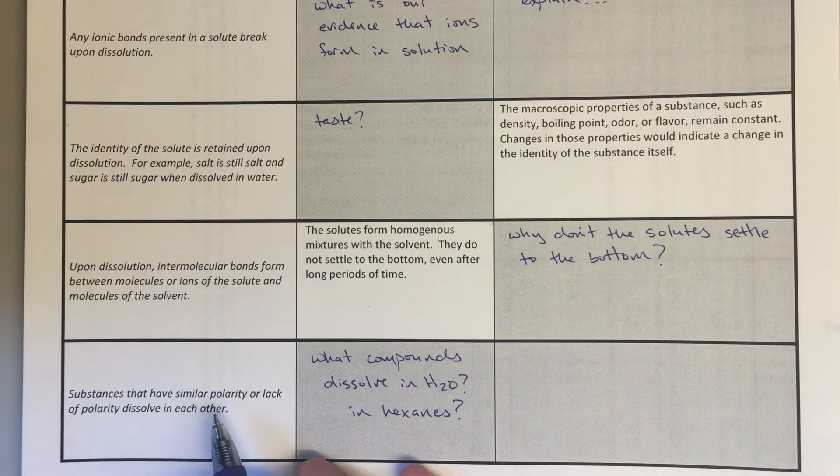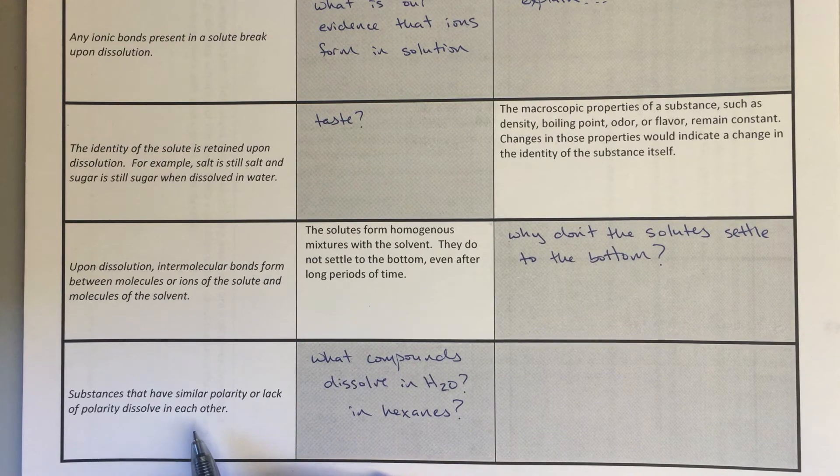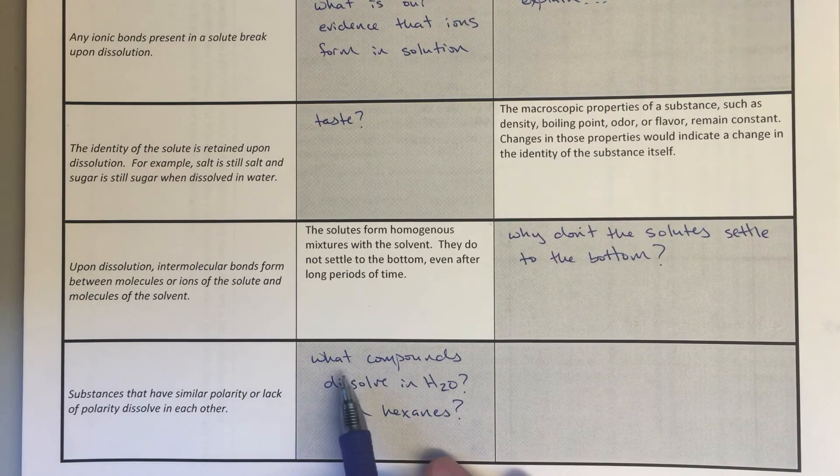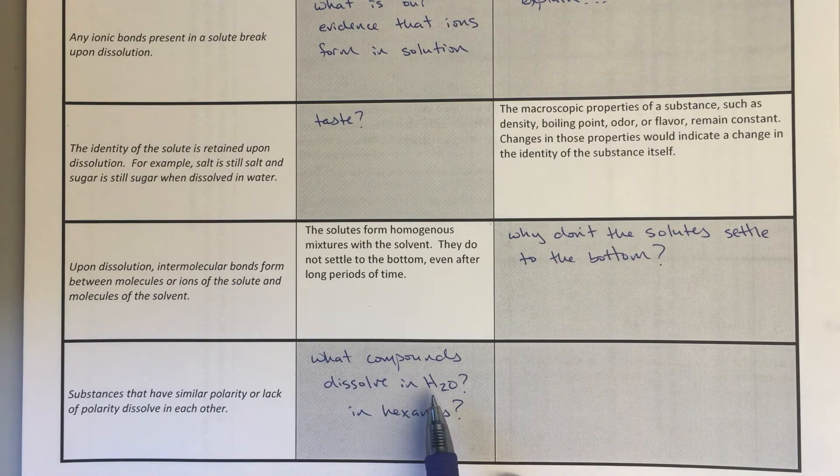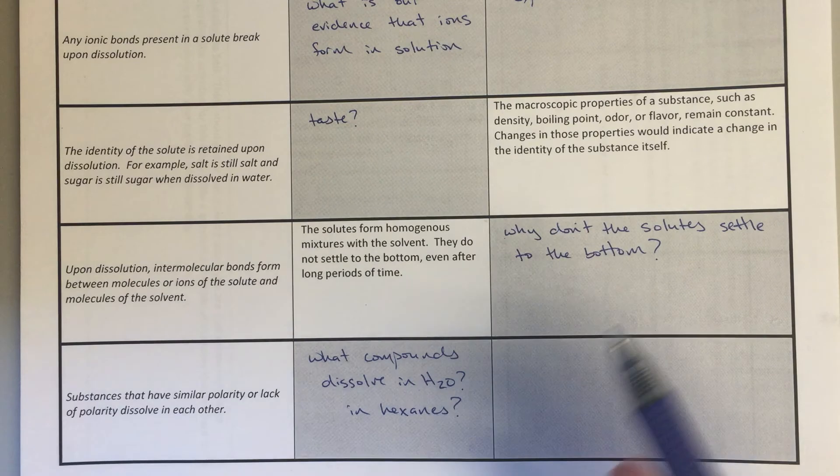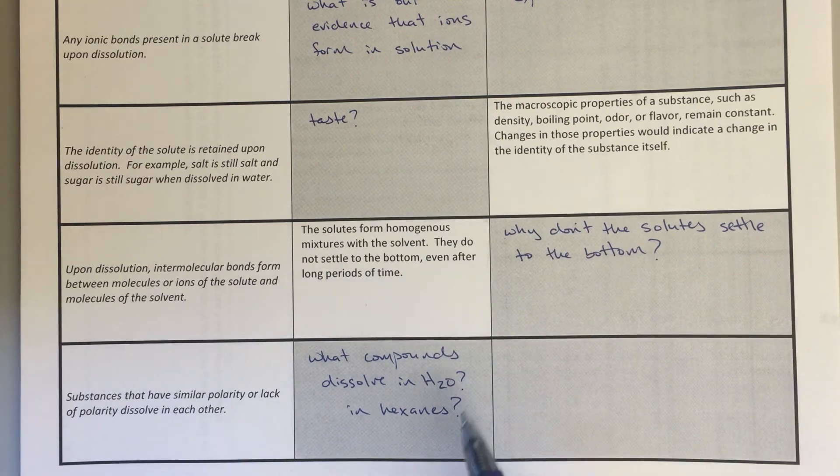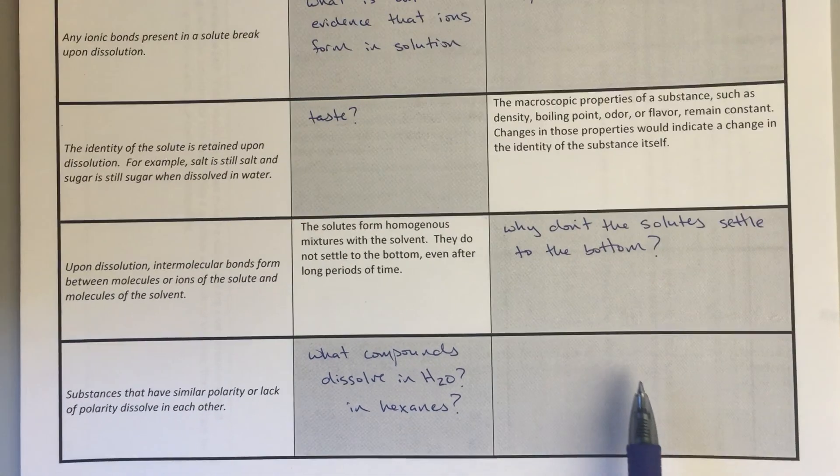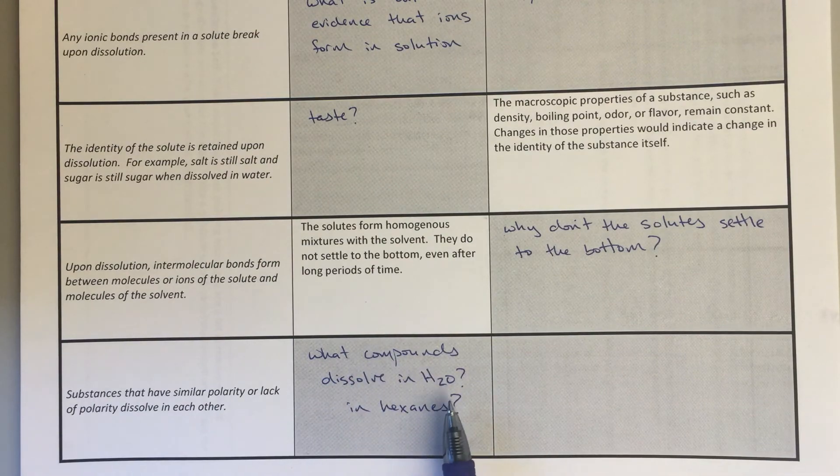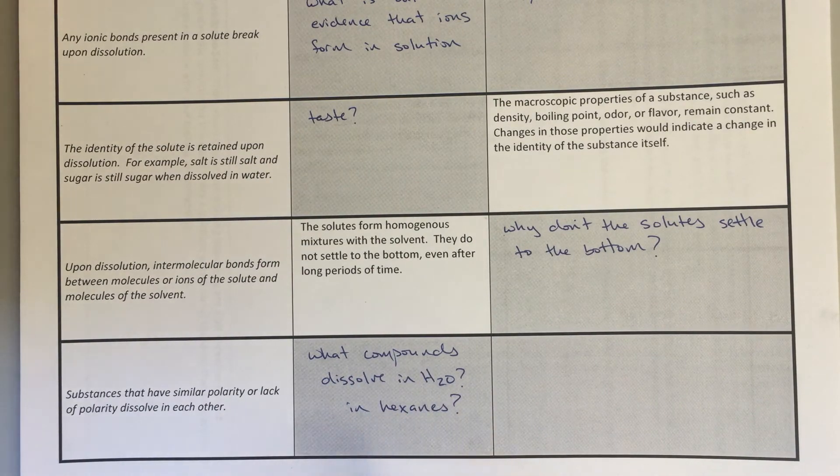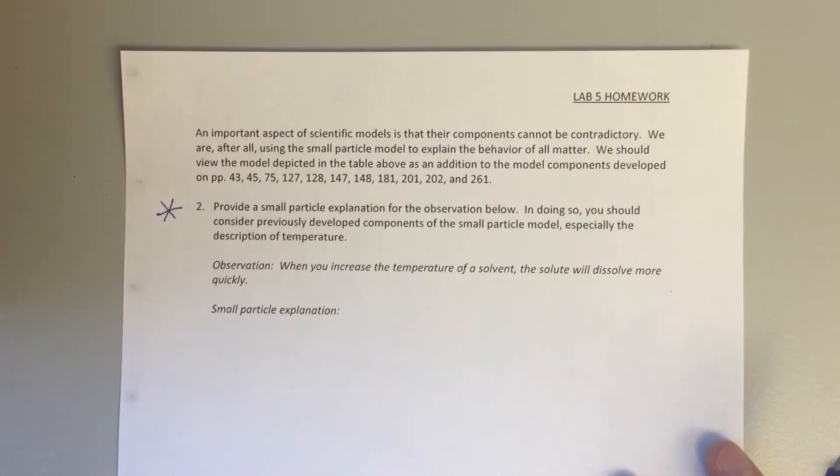The last one here: Substances that have similar polarity or lack of polarity dissolve in each other. So the question here—the evidence I'm looking for would be: What compounds do we see dissolve in water? What compounds do we see dissolve in hexanes? And how are their polarities similar or different? And then the reasoning here would be sort of explaining why certain compounds dissolve in water, why certain compounds dissolve in hexanes. The last thing for this lab homework is this question about scientific models.